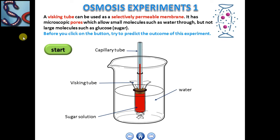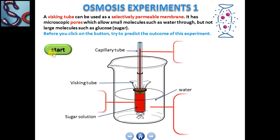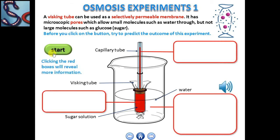A selectively permeable membrane only allows water molecules to pass through it, and large molecules such as sugar and glucose are not allowed to pass through. Notice that the level of the sugar solution in the capillary tube rises as water diffuses into the visking tube.